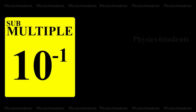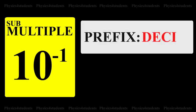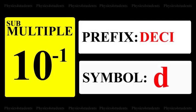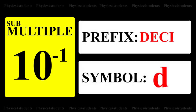Submultiple is 10 raised to minus 1: prefix is Deci, symbol is D.